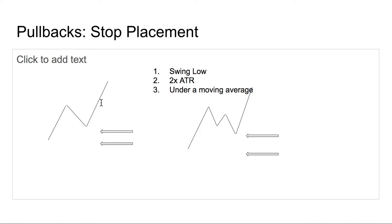For stop placement there are a few approaches. Number one is the swing low — once you've identified the up move, the pullback, and the resumption, you put a stop right below the swing low. Number two is two times your ATR (Average True Range) — find the ATR for the instrument and double it for your risk. Number three is a moving average break — if trading a 20-day moving average, close the position if the stock closes below it; for daily time frames consider the 50-day or 200-day. The same logic applies for complex moves on the downside.